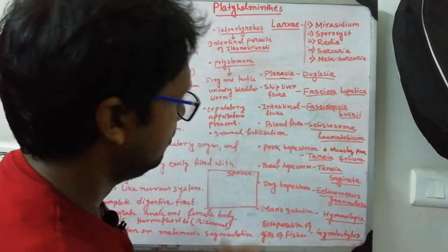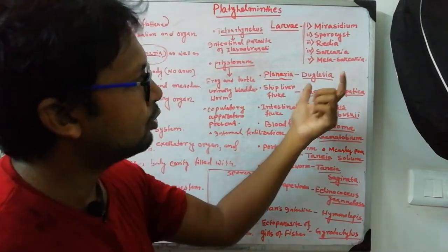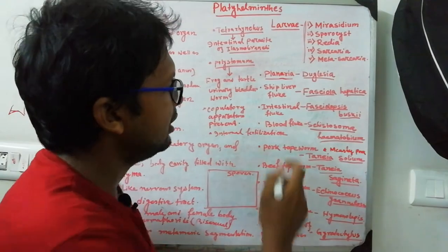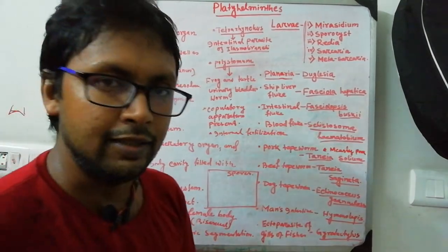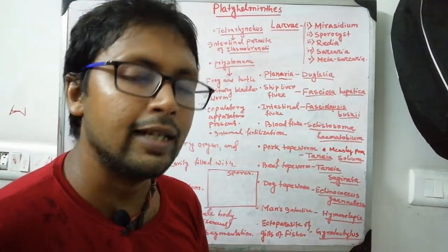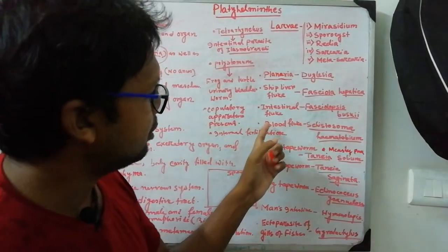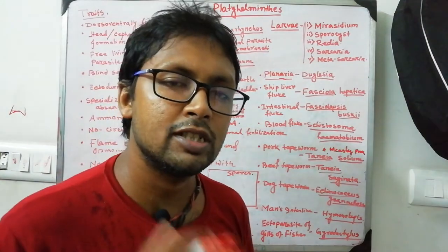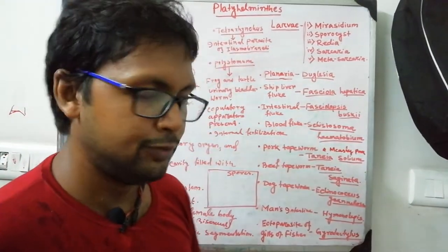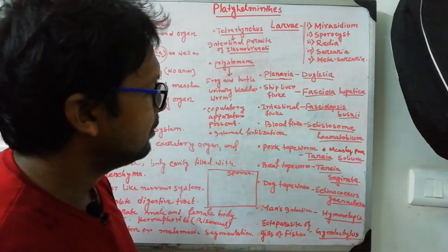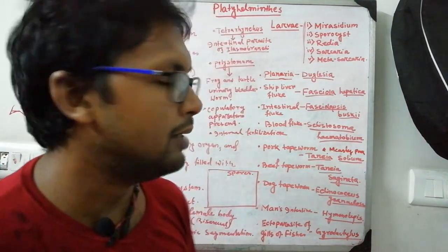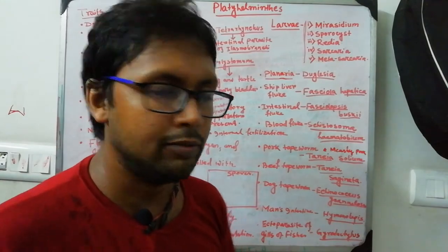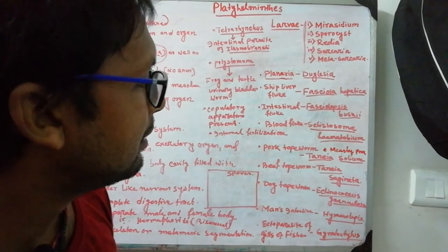Common examples of Platyhelminthes: Planaria (free-living), Fasciola hepatica (liver fluke), Fasciolopsis buski (intestinal fluke). The blood fluke is Schistosoma haematobium, which mainly blocks the hepatic portal system. The tapeworm form is Taenia solium, which requires the life cycle of both pig and human being. The pork infected with Taenia solium contains white spots.